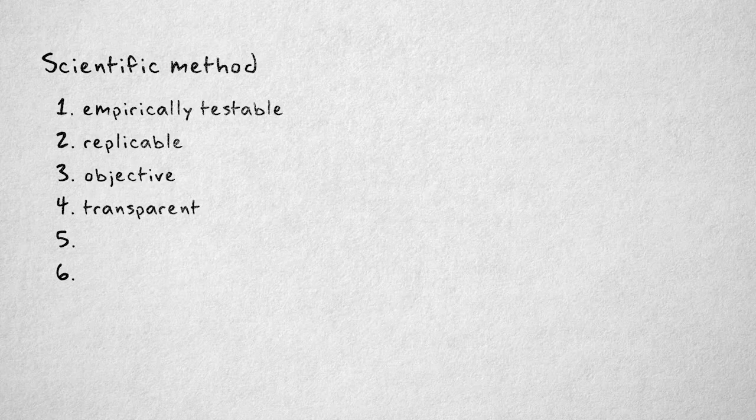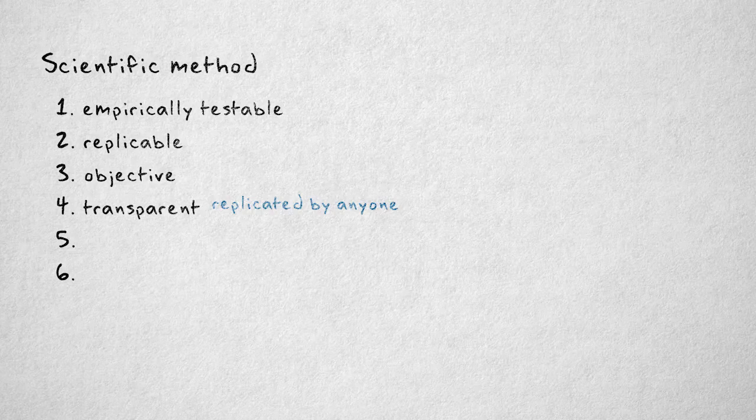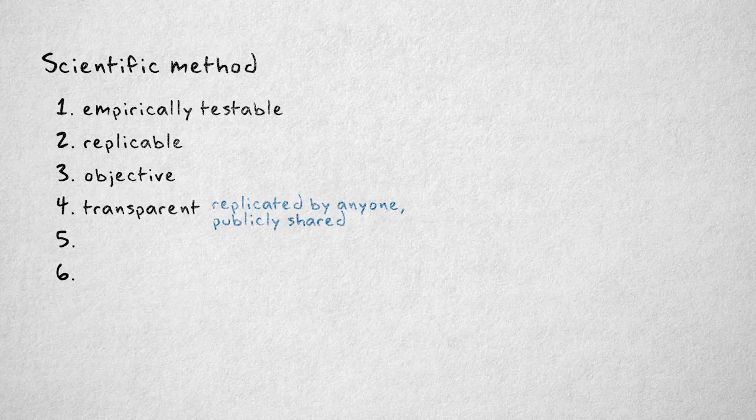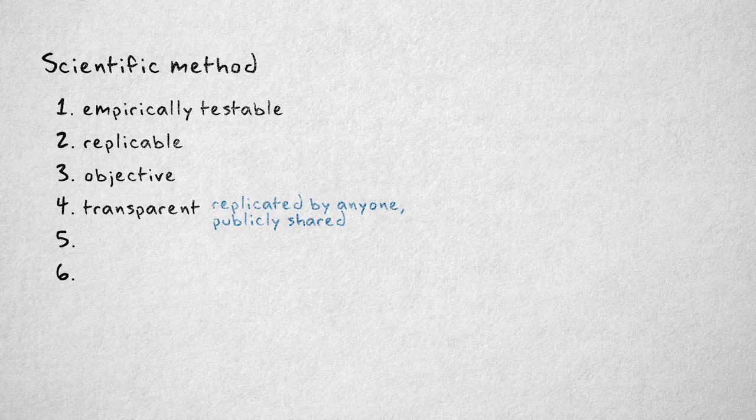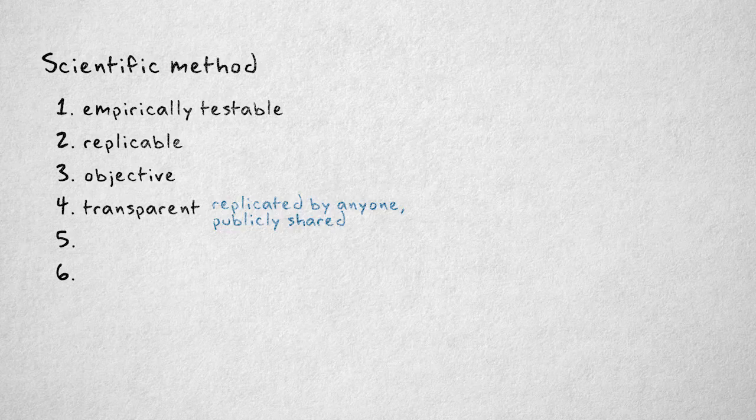In science, anyone should be able to replicate your results for themselves, your supporters, but also your critics. This means that researchers need to publicly share what assumptions were made, how concepts are defined, what procedures were used, and any other information that's relevant for accurate replication. The fifth principle states that a hypothesis should be falsifiable.